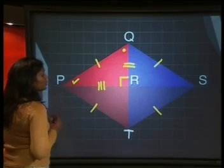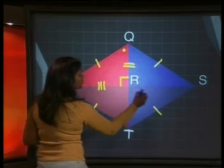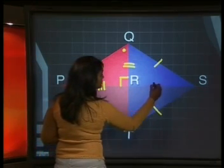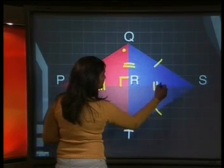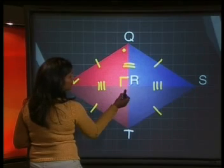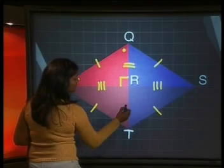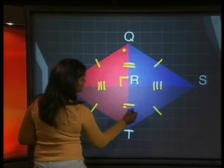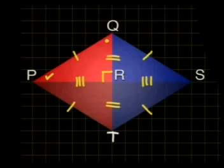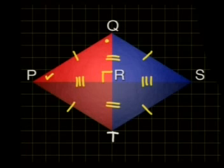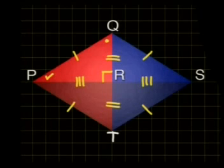We also know that PR is equal to RS and QR is equal to RT. But because we're using a right-angled scalene triangle, the diagonals are not equal to each other, so PS cannot be equal to QT.